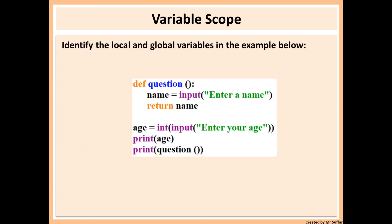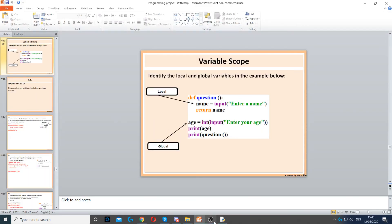Here we have another example. We've got def question, another function called question, because it returns a value. So the local variable will be name, because it's inside the subroutine. And age is going to be the global one, because it's not inside the function. I'll see you next time.